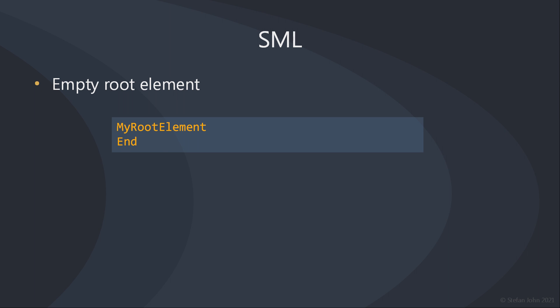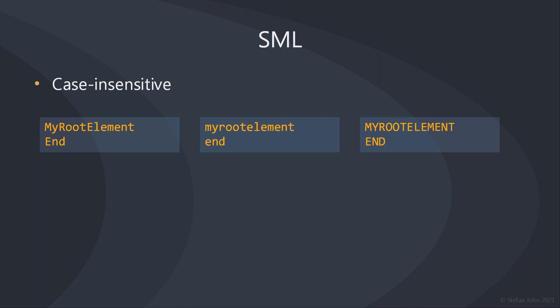Here is how the simplest SML document would look like. A single root element without any child nodes is written in exactly two lines. The first line opens the element, which is named my root element. The second line closes the element with a keyword that was already used over 60 years ago — the end keyword. Names of elements and attributes of simple objects are case-insensitive, and so is the end keyword as well. You can write your names in upper camel case or completely in lower case. You are not forced to obey the capitalization rules of a given SML-based format, which allows you to increase your typing speed when you write an SML document by hand.